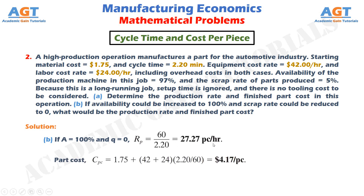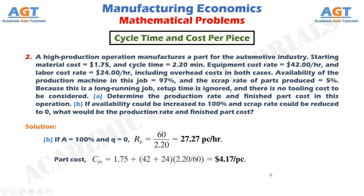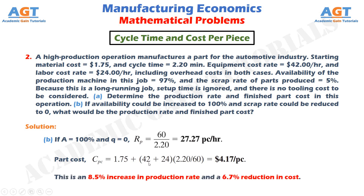The part cost CPC would equal material cost of $1.75, plus (equipment cost rate of $42 per hour plus labor cost rate of $24 per hour) multiplied by cycle time of 2.20 minutes divided by 60. This gives a finished part cost of $4.17 per piece, compared to $4.47 per piece before. The production rate of acceptable parts also increased from 25.13 pieces per hour to 27.27 pieces per hour.